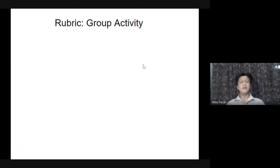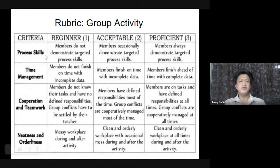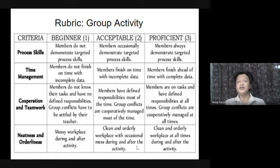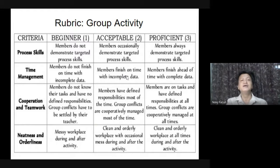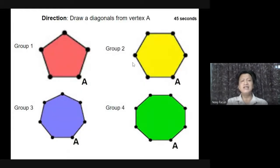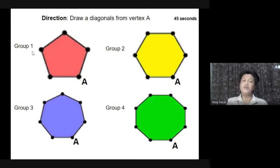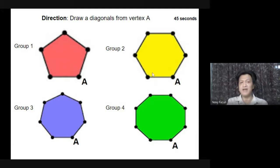So with that, I have an activity for you, but before that I will discuss first the rubric. The criteria are the following: process skills, time management, cooperation and teamwork, and neatness and orderliness. Take note of this — be mindful of the four criteria of your group activity today. Do you know your members? Group leaders, okay, very good. So listen to the directions: you are going to draw diagonals from vertex A. You have an assigned shape for group one, two, three, and four — different shapes of polygon. You only have 40 seconds to perform the activity.